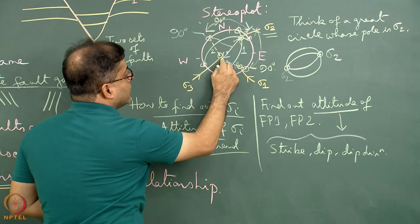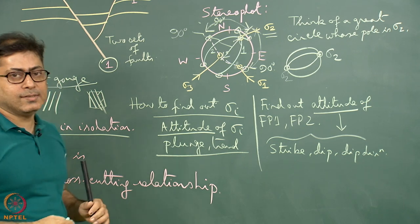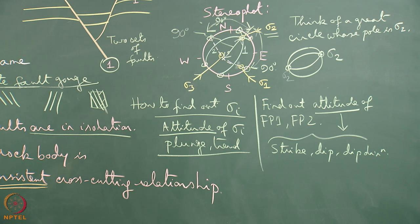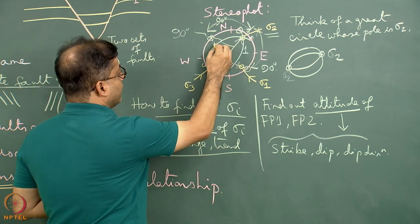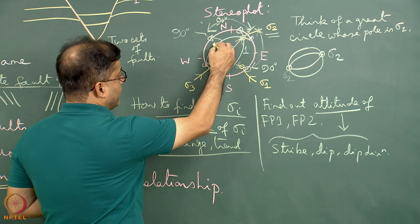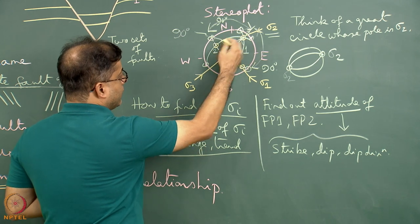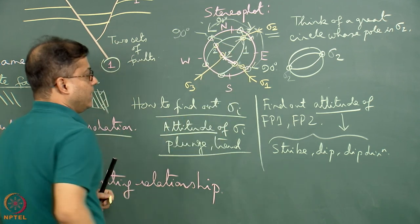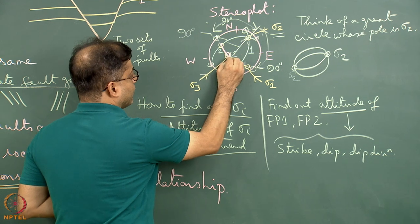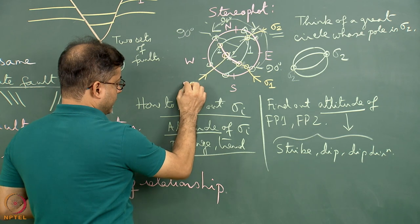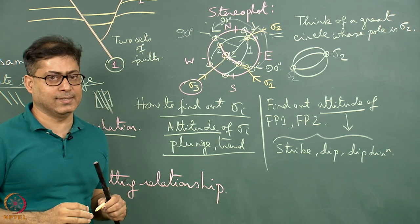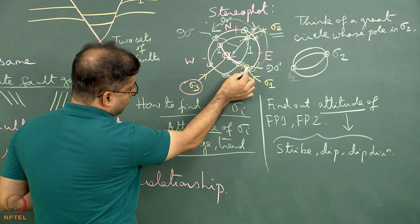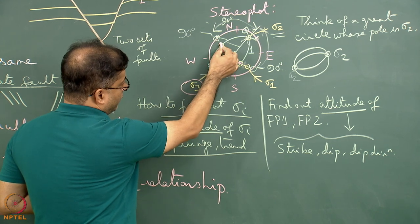This great circle represents a plane whose pole, at 90 degrees, is sigma 2. Once this great circle is drawn, find the intersection between the fault planes and this wide dashed great circle. Then bisect the total angle between these intersections. The bisecting point represents the sigma 3 principal stress axis.